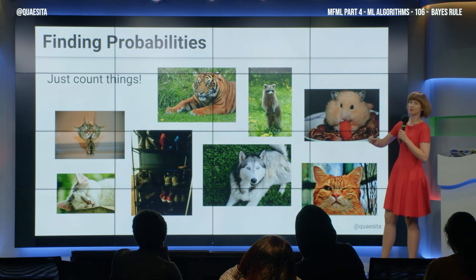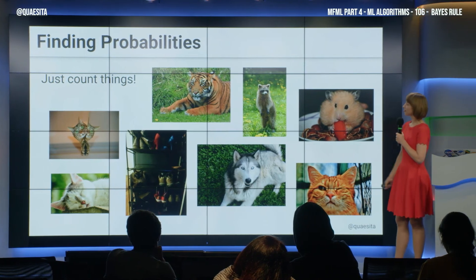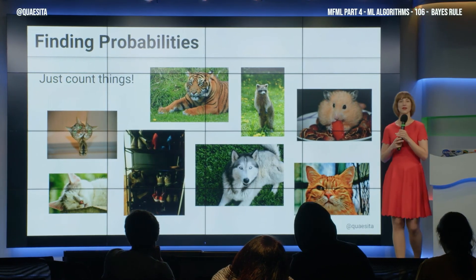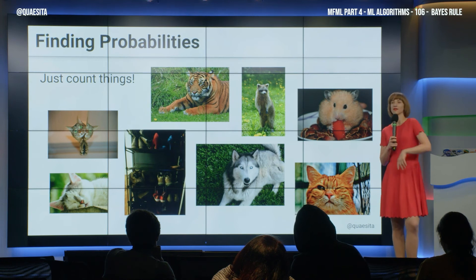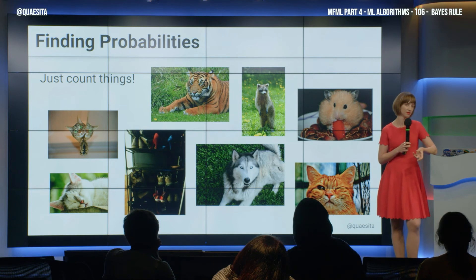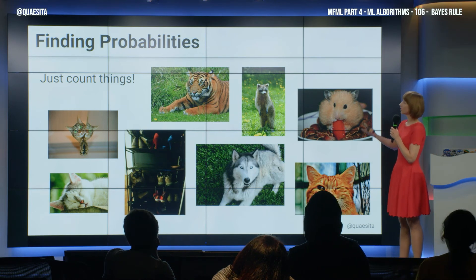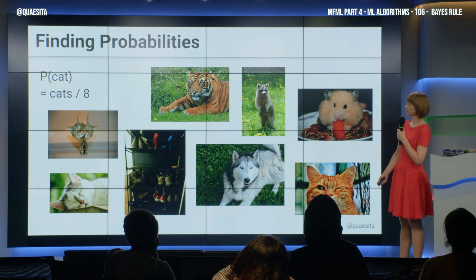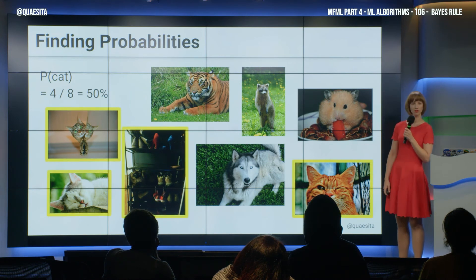What does this boil down to computationally? It's all about counting things. We're going through this quick little demo just to show you the simplicity of the operations involved. Super simple — look at this. Probability of cat: how do we get that? How many pictures? Eight. How many of them are cats? Four. Fifty percent.